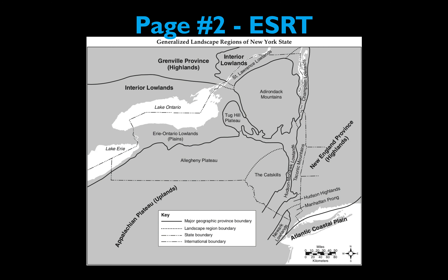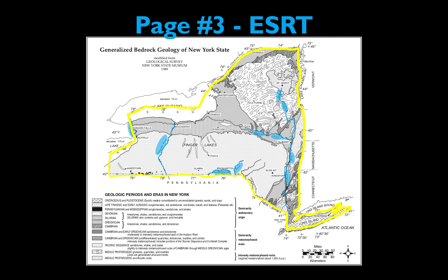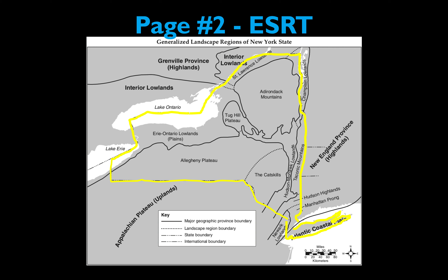I want to remind you that pages two and three of the reference table work together, and you're going to need to use the landscape region information and the river information on page three to answer some questions simultaneously. Look at the dashed lines that make up the outline of New York State — I've highlighted those in yellow to emphasize the boundary of our state. That same boundary exists on page three. The size and shape of New York are identical on both pages, and each river is associated with specific landscape regions.